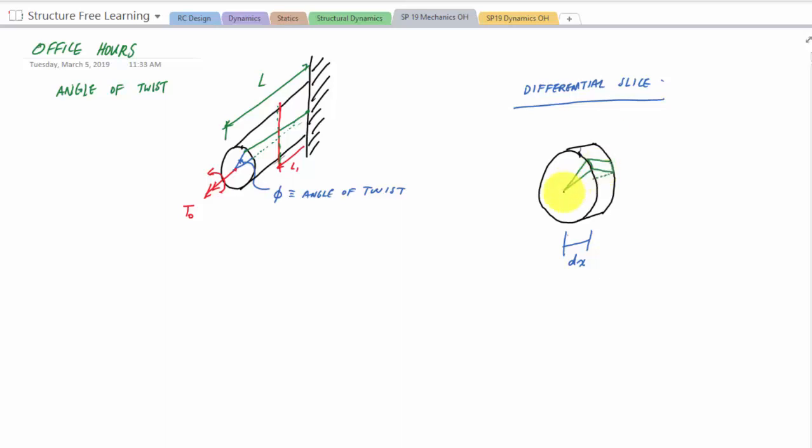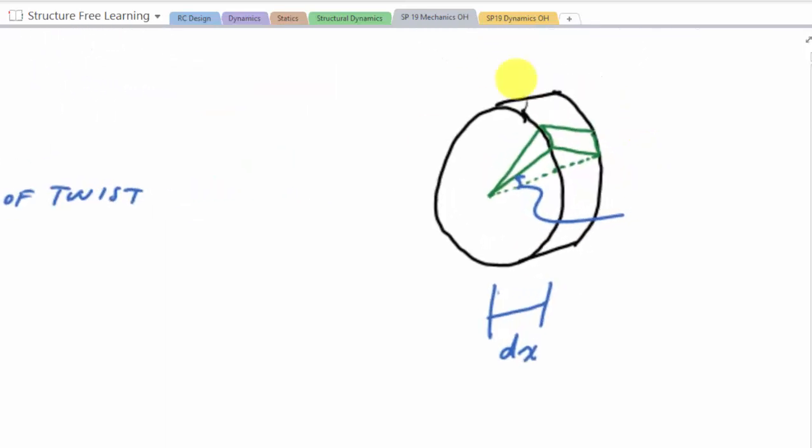And this portion right here is this angle of twist, and in this case, if you can look at that, that little part right there we would call that D-phi, the differential angle of twist. And this segment right here, that portion right there is this length, and if I look right here, from here to here is also the same DX.